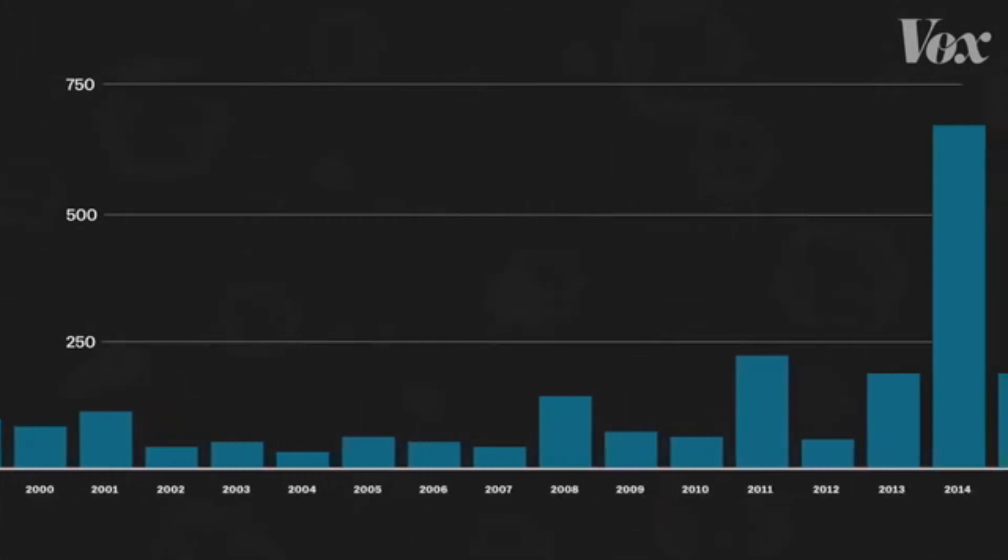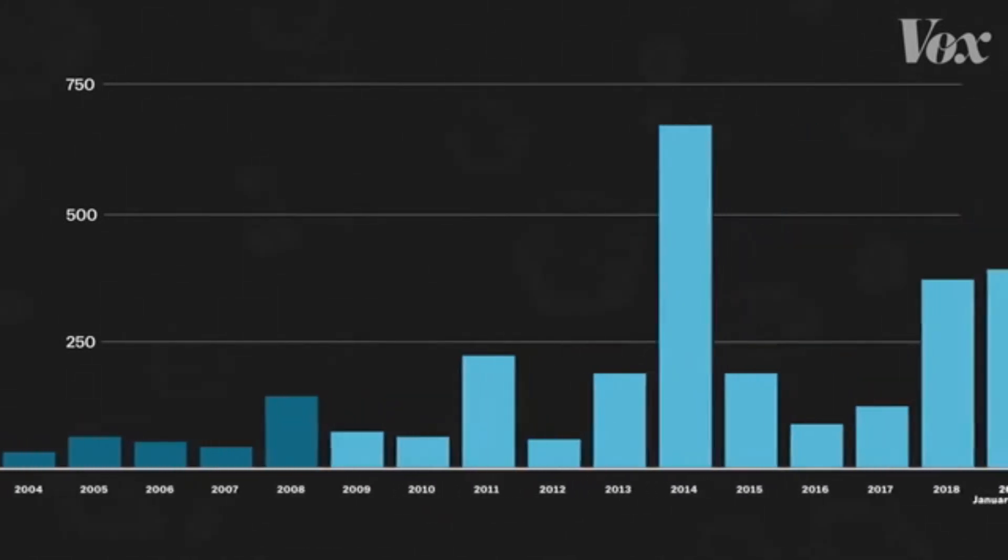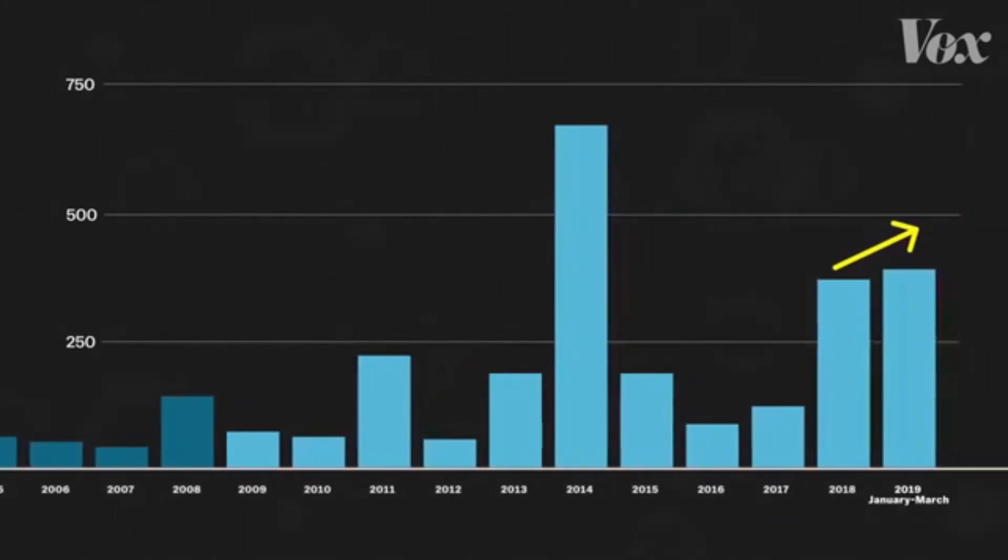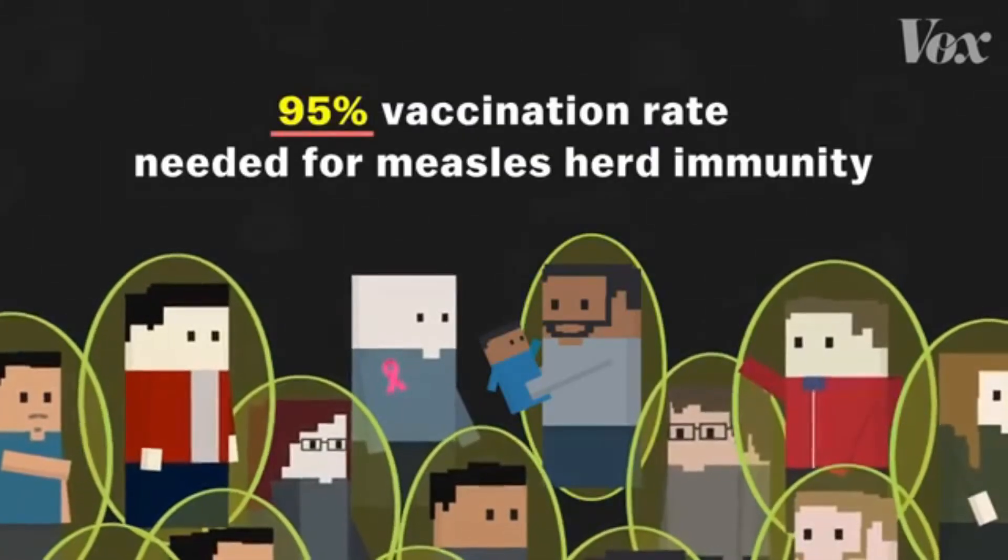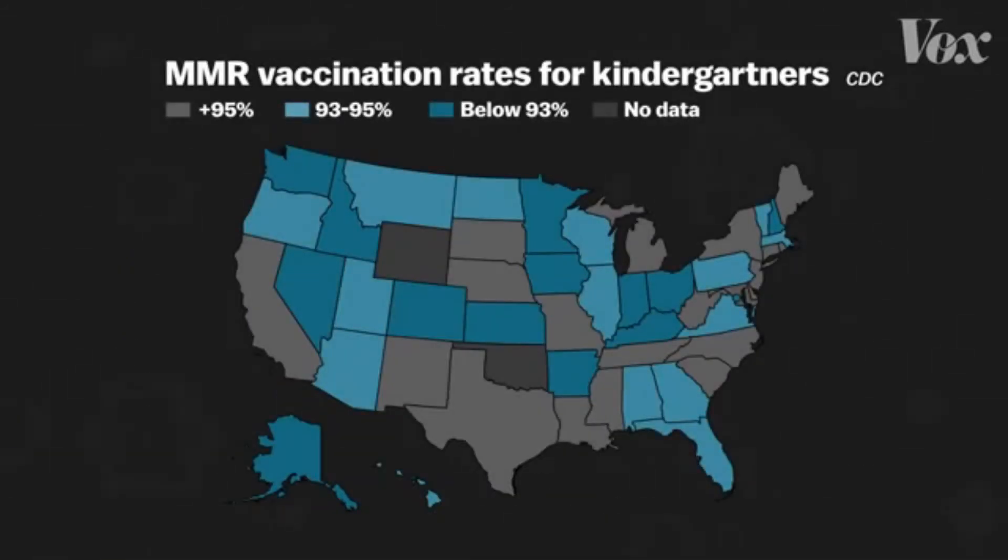The WHO noted that some countries that were close to eliminating the disease have seen a resurgence. In the United States, approximately 100,000 young children have not been vaccinated against any of the 14 potentially serious diseases for which vaccines are recommended, according to a report released last year by the Centers for Disease Control and Prevention. While most American children are routinely vaccinated, the number who have received no vaccines by the age of 2 is slowly creeping up.